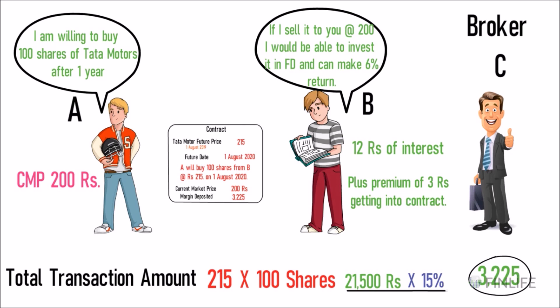This is what a futures contract is. A and B have agreed that on 1 August 2020, A will buy 200 shares of Tata Motors from B at 215 rupees. Both have deposited 15% of 21,500 rupees as margin with broker C. On a daily basis, the future prices will keep fluctuating, and C will manage those mark-to-margin adjustments.